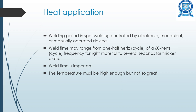The welding period in spot welding is controlled by an electronic, mechanical, or manually operated device. The welding time may range from one half of a 60 Hz cycle for light material to several seconds for thicker plate. The temperature must be high enough but not excessive to achieve a good weld.